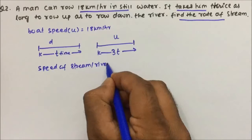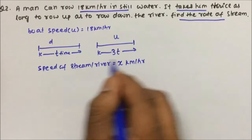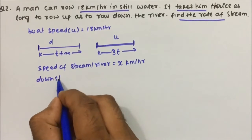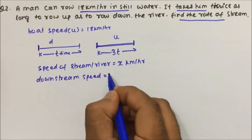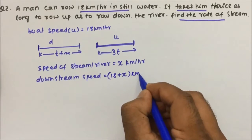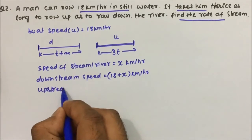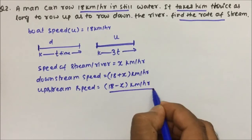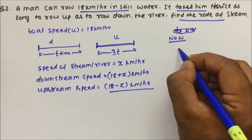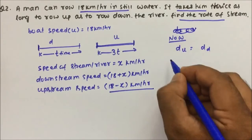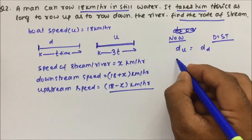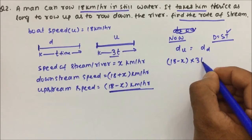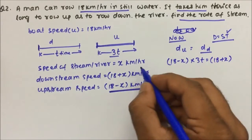Let the speed of the stream be x km/h. Distance is the same for upstream and downstream. Downstream speed = 18 + x km/h, and upstream speed = 18 − x km/h. Using distance = speed × time: upstream distance = (18 − x) × 3t and downstream distance = (18 + x) × t. Setting them equal since distance is the same.